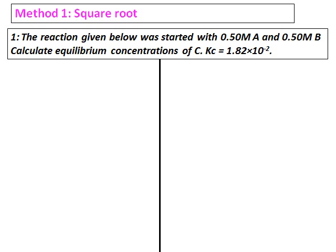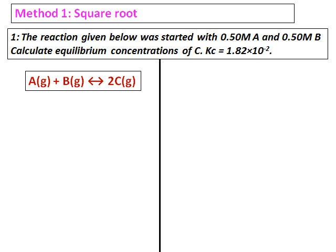Let's do the square root method first. Consider the reaction given below. It was started with 0.50 molar A and 0.50 molar B. Calculate the equilibrium concentrations of C. Kc is given. This doesn't come under the small K or the large K approximation because the value of K is 10 to the power of negative 2. The reaction given is A plus B giving you 2C.